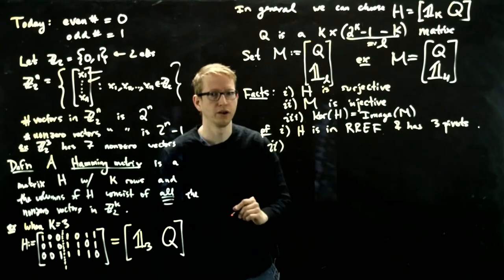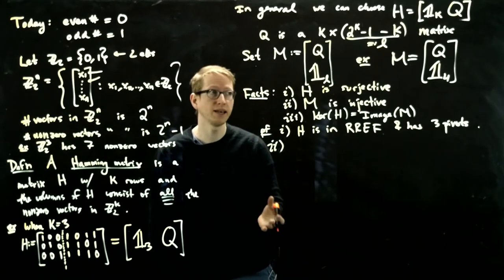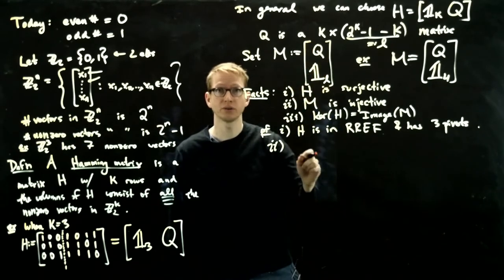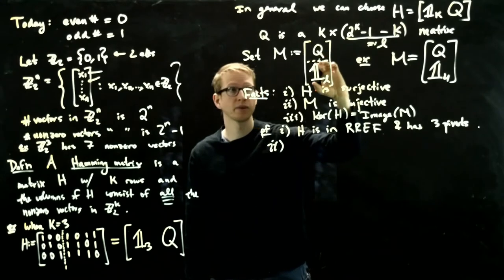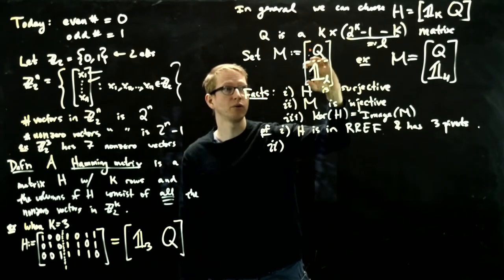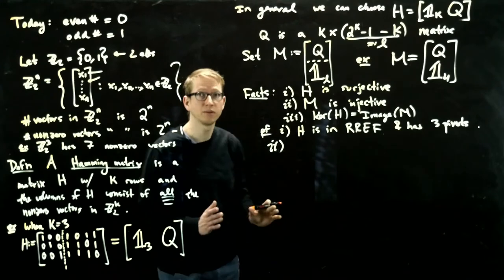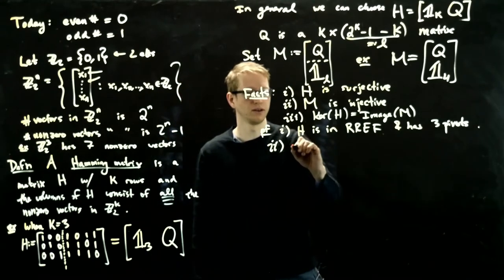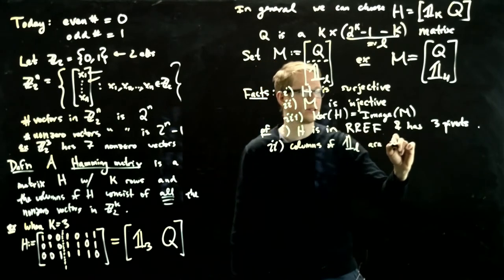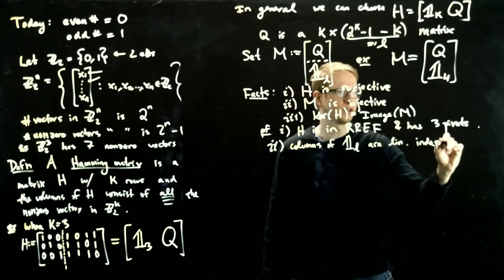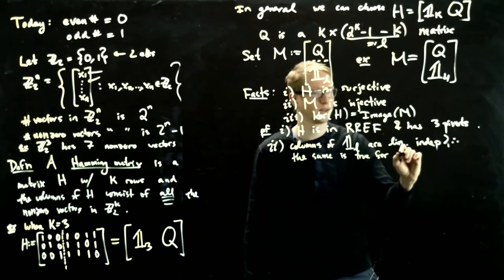In order to show that M is injective, we have to show that the kernel of M is 0. Another way of saying that is that the columns of M are linearly independent. But this is obvious by looking at the columns, because if we look at the identity matrix, it doesn't matter what's going on up here. We already know that all of these are linearly independent, and therefore the columns consisting of the Q matrix on top and the identity matrix on bottom are also linearly independent. So the columns of the identity matrix are linearly independent, and therefore the same is true for M.